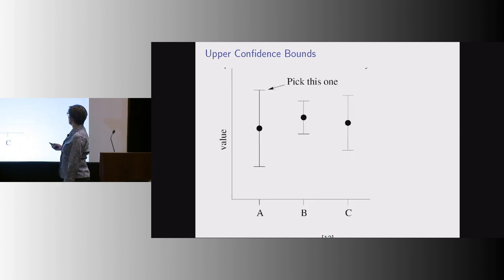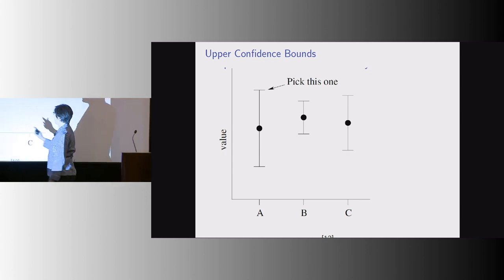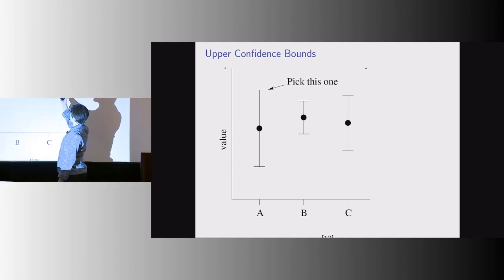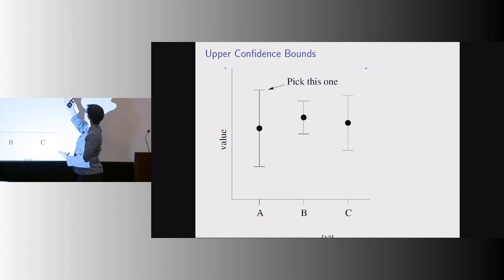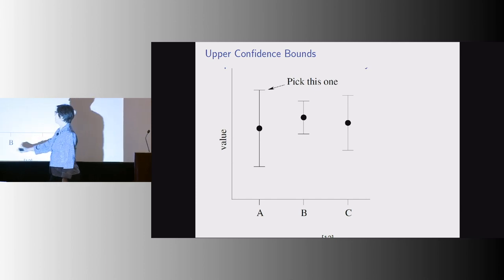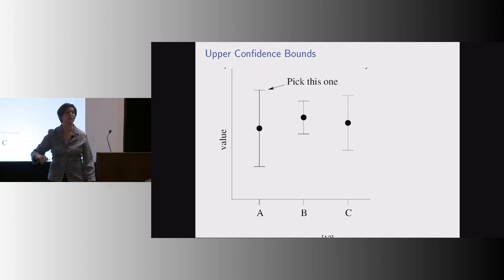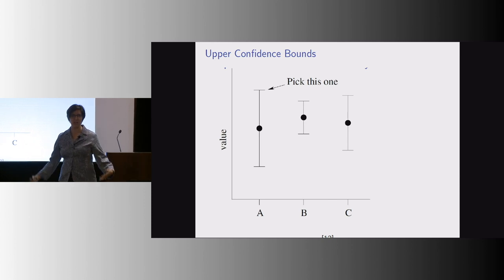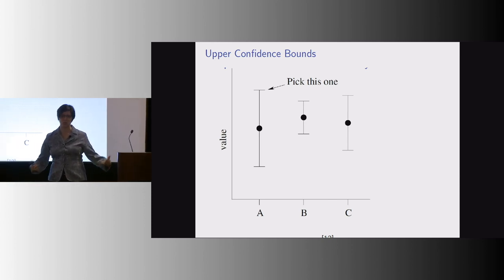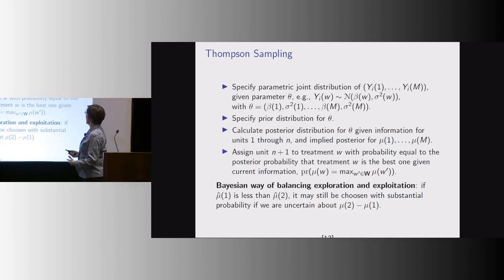There are a couple of heuristics. The first is called upper confidence bounds: given historical data, if there are arms A, B, and C, you have a mean and standard deviation for each arm. Upper confidence bounds says for the next person, assign them to arm A because the top of the confidence interval looks best for arm A. Believe it or not, that heuristic works and actually has the best theoretical guarantees, although it doesn't work as well in practice as other things — which is a sign the theory is incomplete.